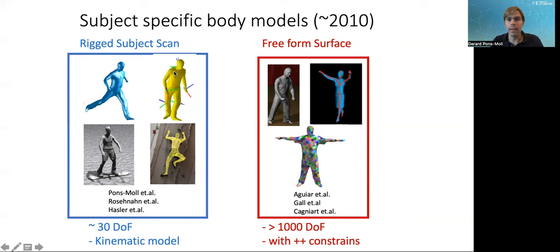It was limited to the clothing you were wearing at that point, so it didn't adapt to new clothing you might wear. And it was, of course, subject specific. So you could not use the same model for different shapes.